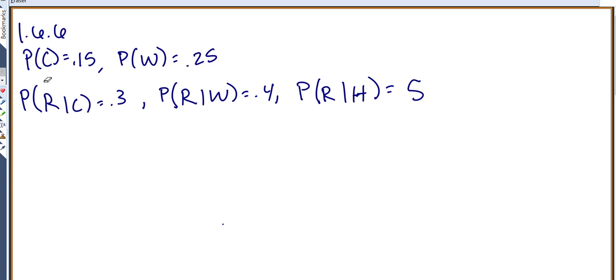So anytime I see a structure like this, where you're first either in one set of categories, and then you check another set of categories, that reminds me of tree diagrams, so I would start this with a tree diagram.